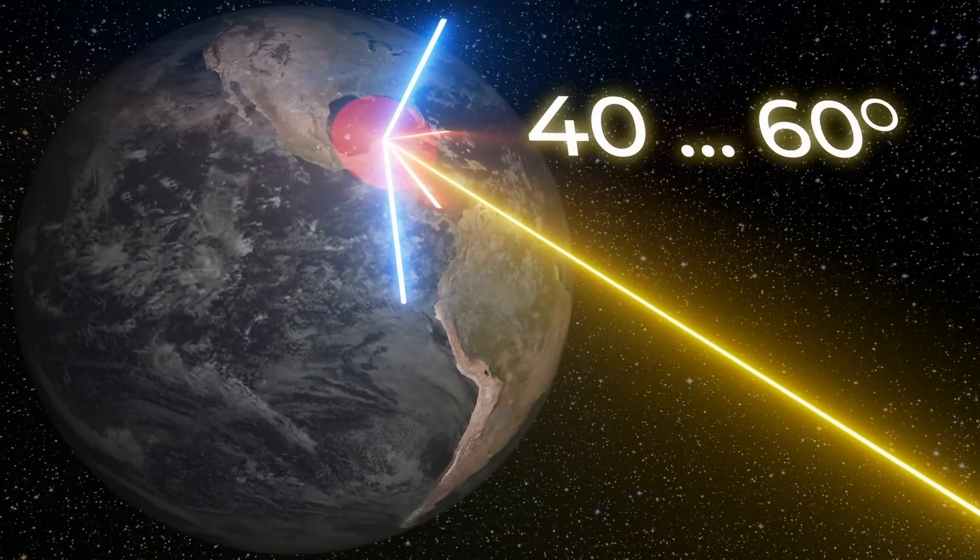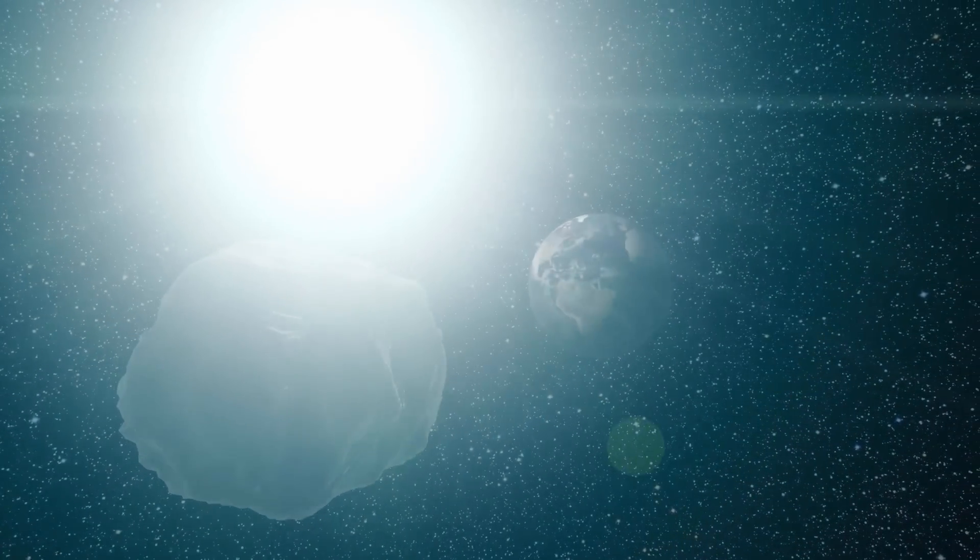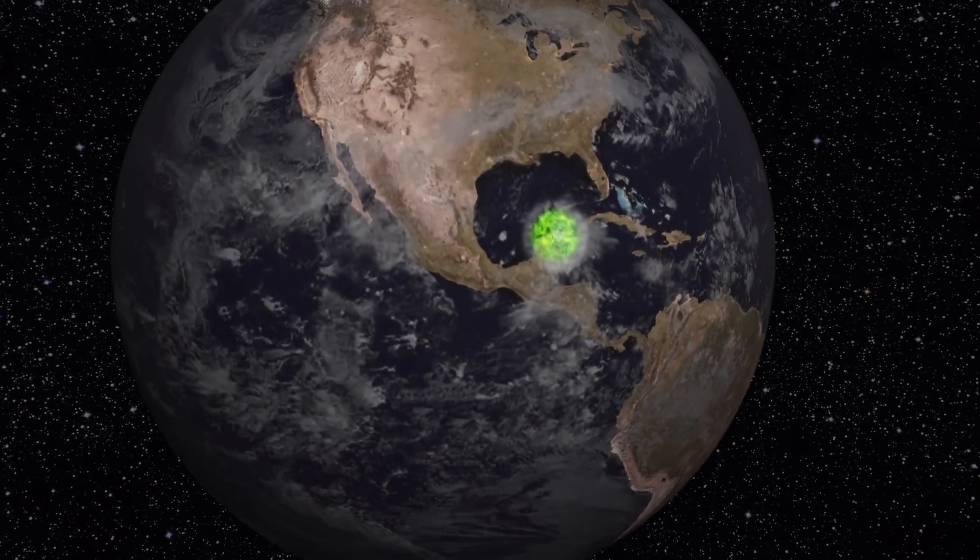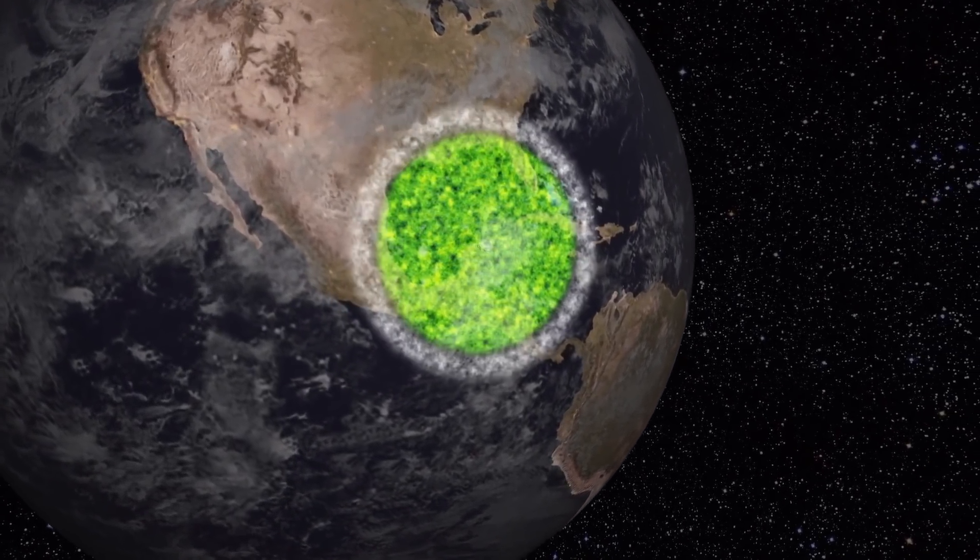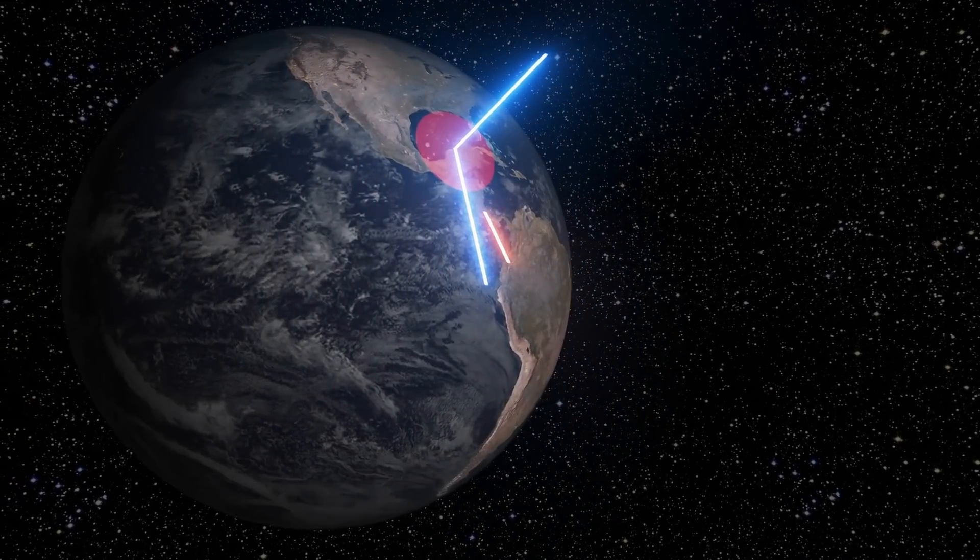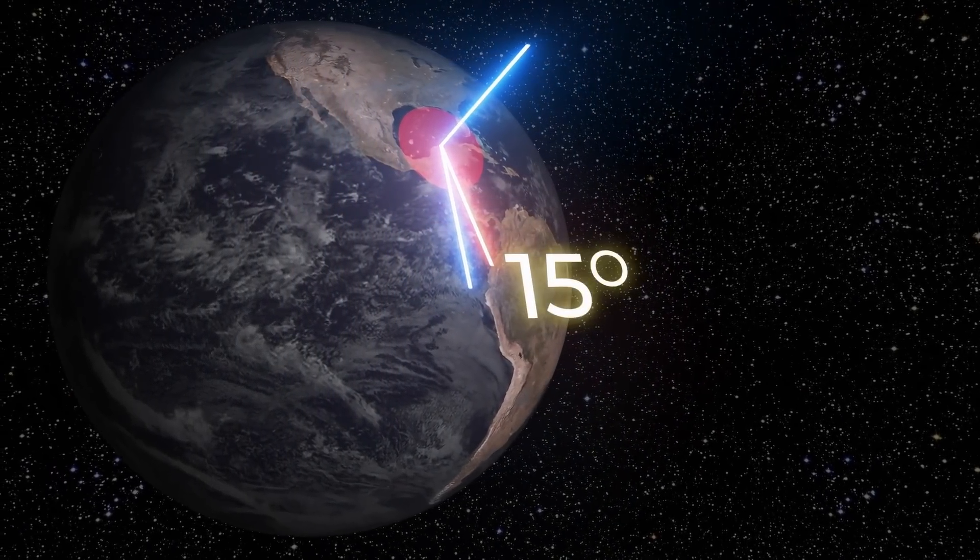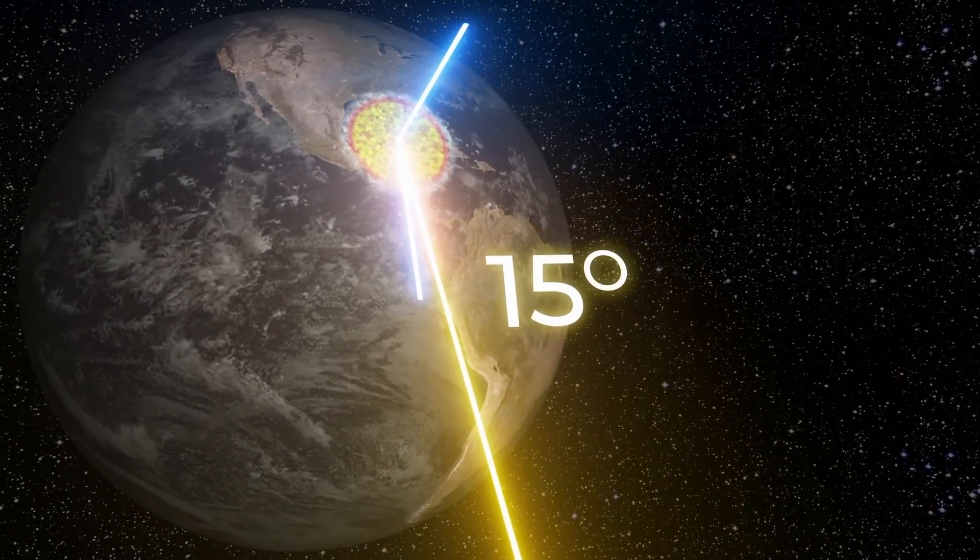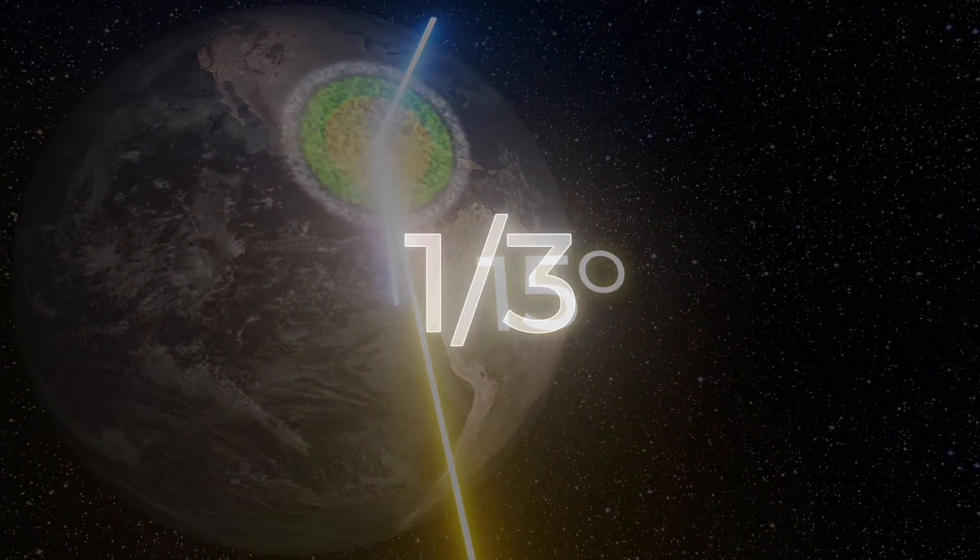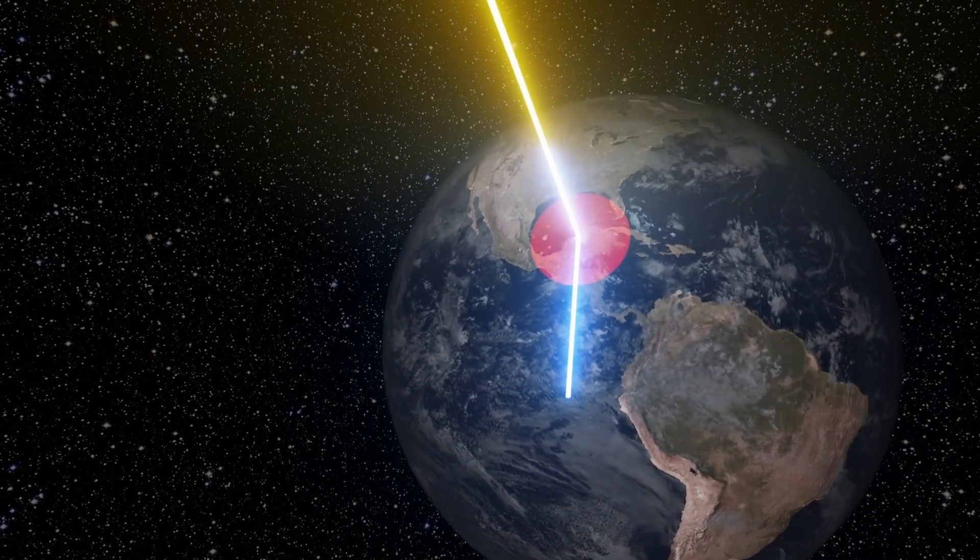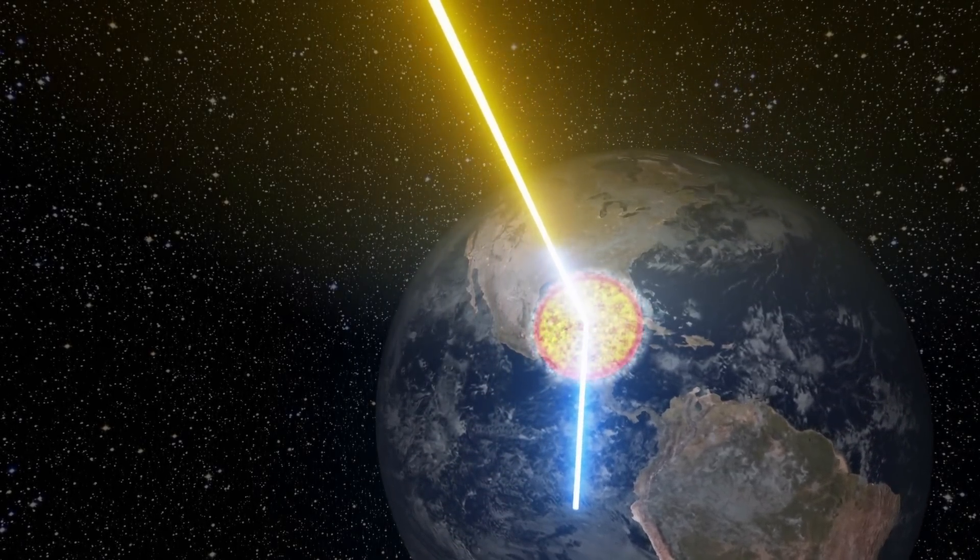argue that Chicxulub struck the Earth at an angle of 40 to 60 degrees and came from the southeast. Collins calls this corner the deadliest. The asteroid impact released an incredible amount of climate-changing gases into the atmosphere, triggering a chain of events that led to the extinction of the dinosaurs. But if the asteroid had hit the Earth at an angle of 15 degrees, the dust, carbon dioxide, and sulfur compounds released would have been about one-third the amount. Even if the fall had been strictly vertical, the consequences would not have been so terrible.